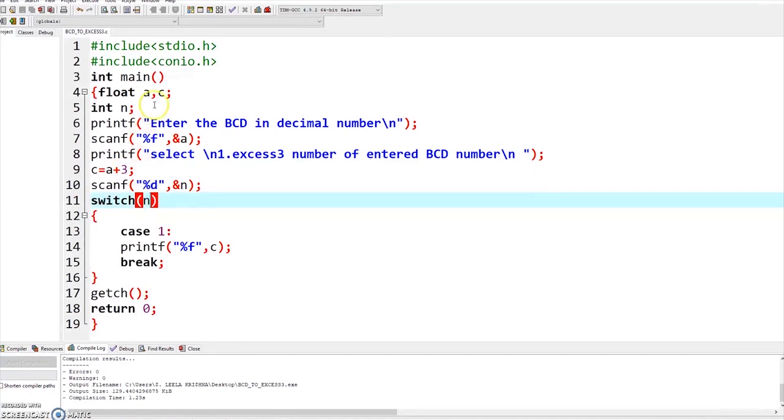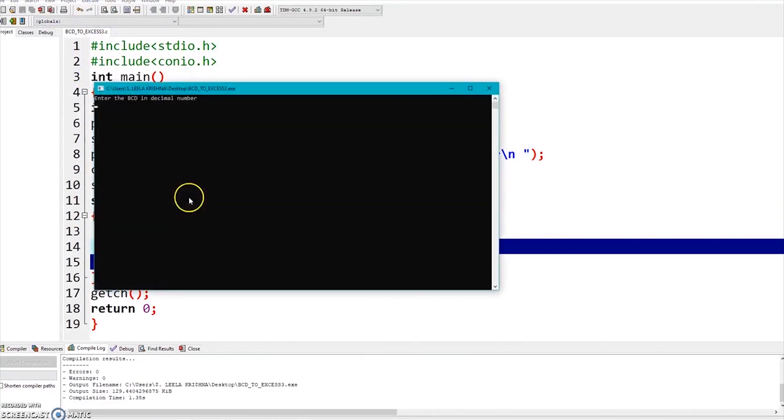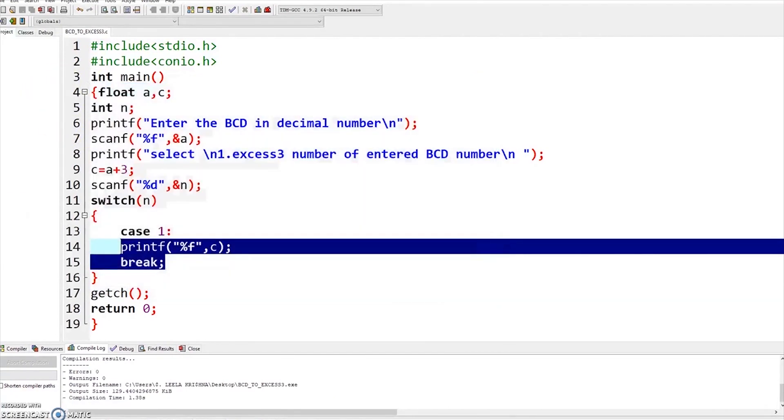When the user presses 1, it executes case 1, that is c equals a plus 3. It prints the number entered by the user plus 3 for Excess-3. I have entered 4 and got output 7. Successfully implemented the BCD to Excess-3 Code Converter in C programming.